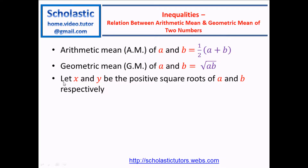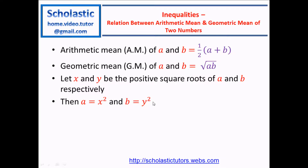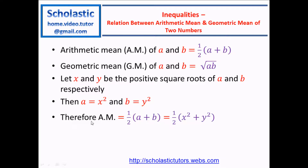Now, let's take x and y to be the positive square roots of a and b respectively. That means a is equal to x squared — so x is the square root of a, and if you square x, you get a. Also, b is equal to y squared, because y is the positive square root of b. Now, what we are going to do is apply the values of a and b in terms of x and y in this equation.